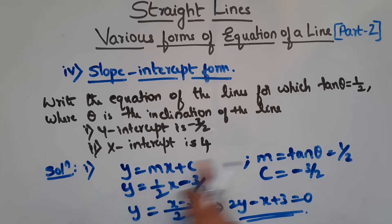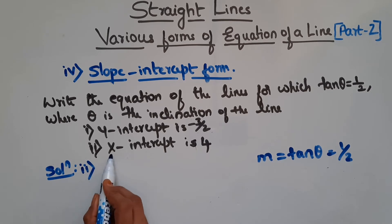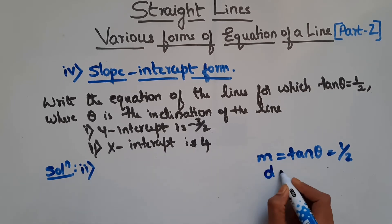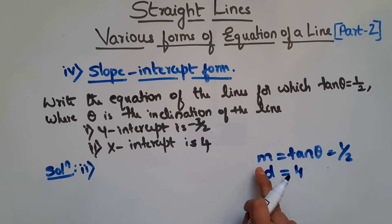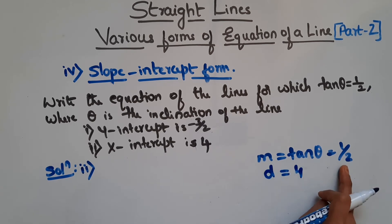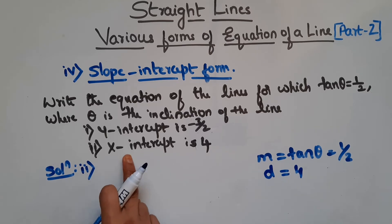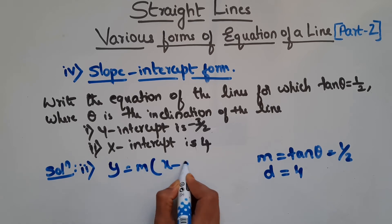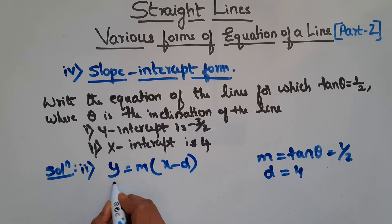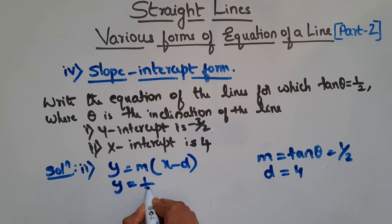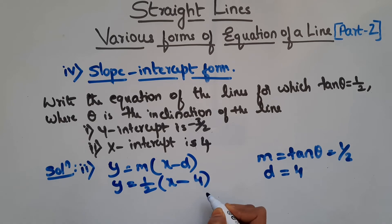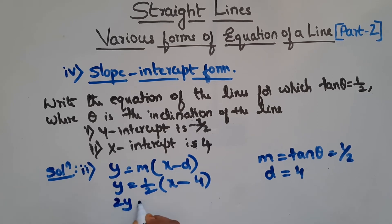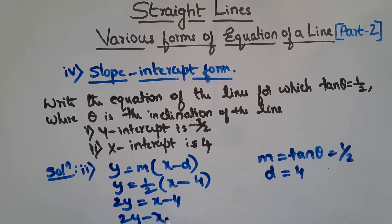Now let us see the second part. Here we have x-intercept is 4, so d equals 4. Slope is same: m equals tan theta equals 1/2. When x-intercept and slope is given, the formula is y equals m into (x minus d). Substituting: y equals (1/2)(x minus 4). Bringing 2 to the left: 2y equals x minus 4. So 2y minus x plus 4 equals 0. This is your equation of the line.